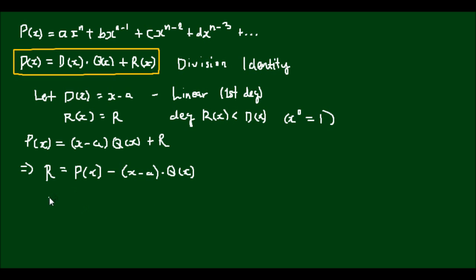Well let's look at a special case when x is equal to a. This means the remainder r is equal to p of a minus a minus a times q of a, which equals p of a minus 0 times q of a, which of course is equal to p of a.